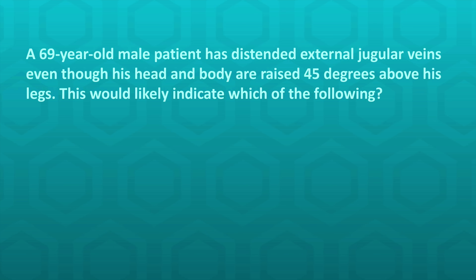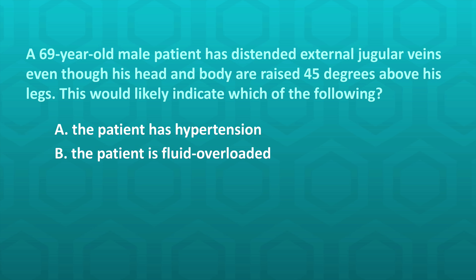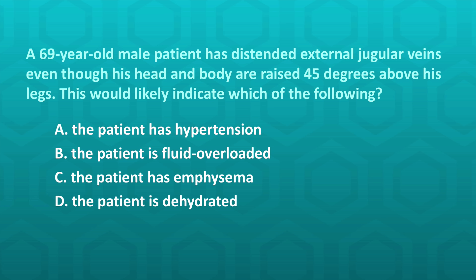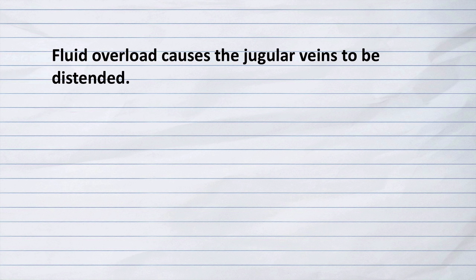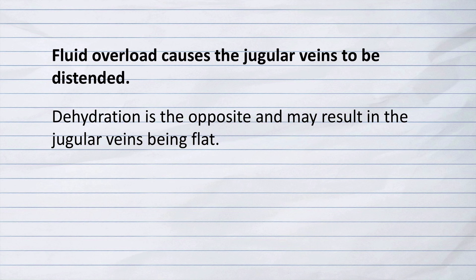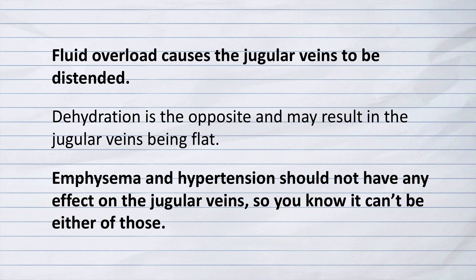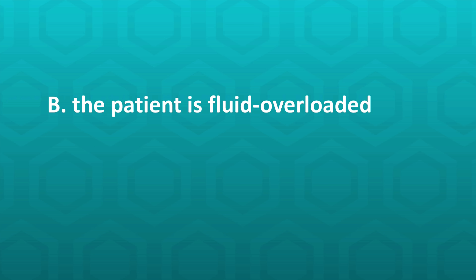A 69-year-old male patient has distended external jugular veins even though his head and body are raised 45 degrees above his legs. This would likely indicate which of the following? A) The patient has hypertension, B) The patient is fluid overloaded, C) The patient has emphysema, or D) The patient is dehydrated. The correct answer is B — the patient is fluid overloaded. Fluid overload causes the jugular veins to be distended; dehydration is the opposite, resulting in flat jugular veins. Emphysema and hypertension should not have any effect on the jugular veins.